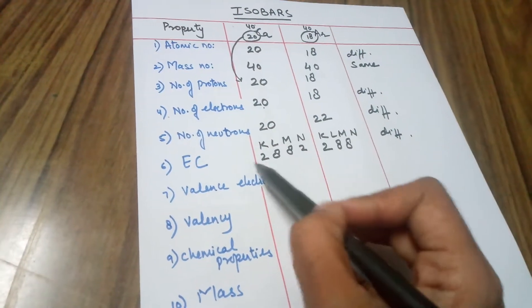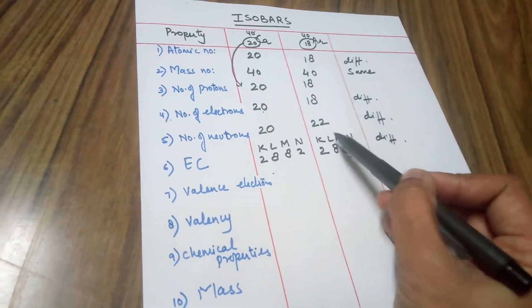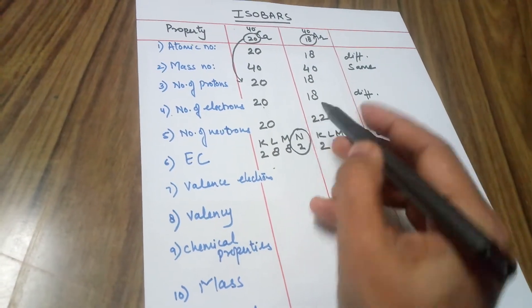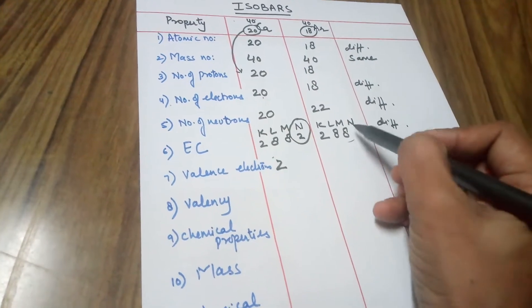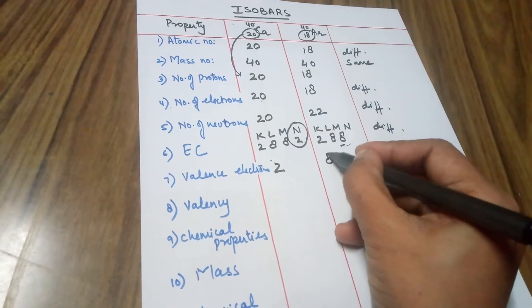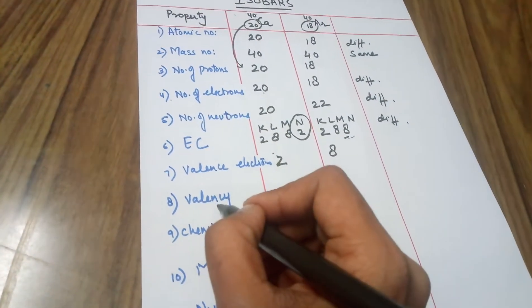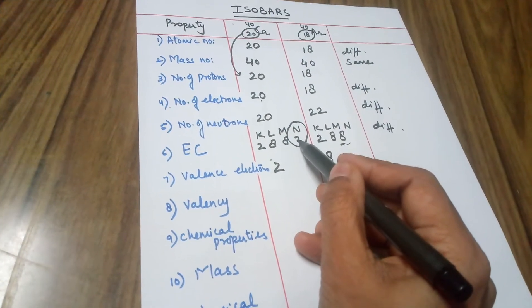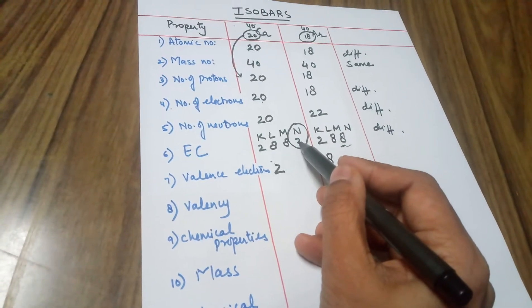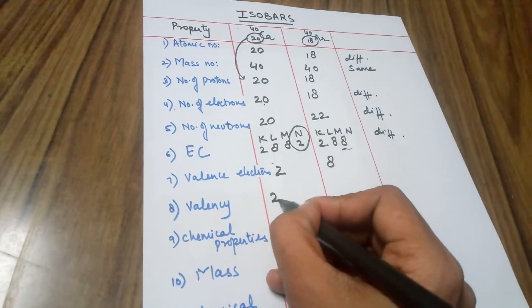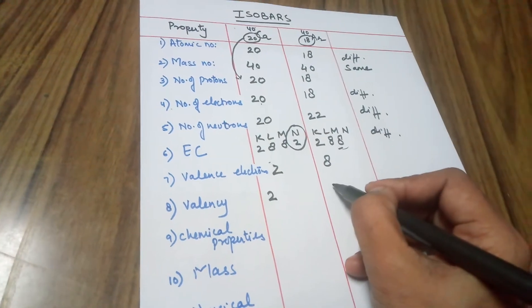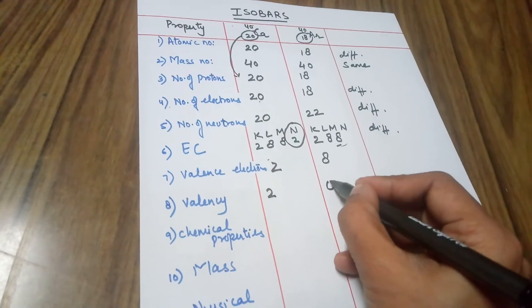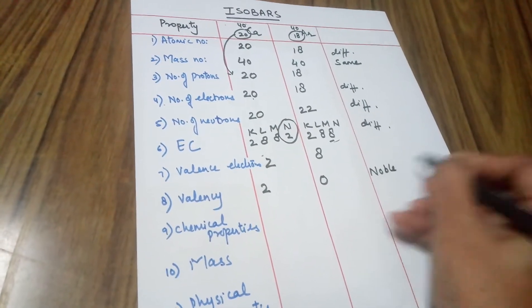In calcium's case there are 4 shells occupied; for argon there are 3 shells occupied. The valence electrons — which are the last shell electrons — are 2 in the case of calcium, and 8 in the case of argon. The valency for calcium would be either 2 or 8 minus 2, whichever is less — 8 minus 2 is 6, so the valency is 2. For argon, the valency would be 8 minus 8, which is 0. So the valency is 0 — argon is a noble gas.